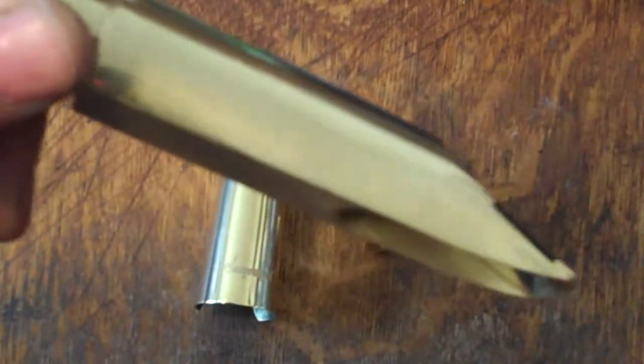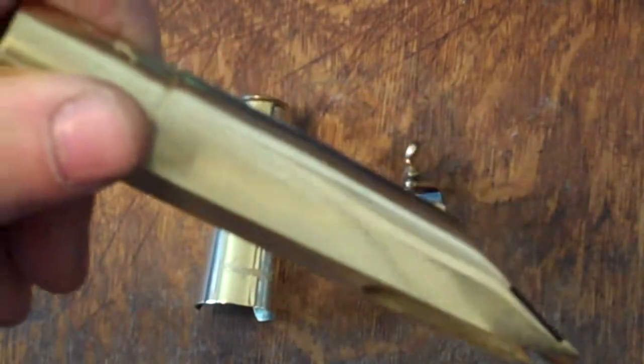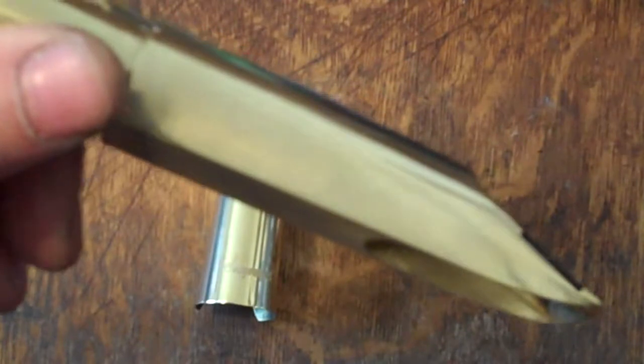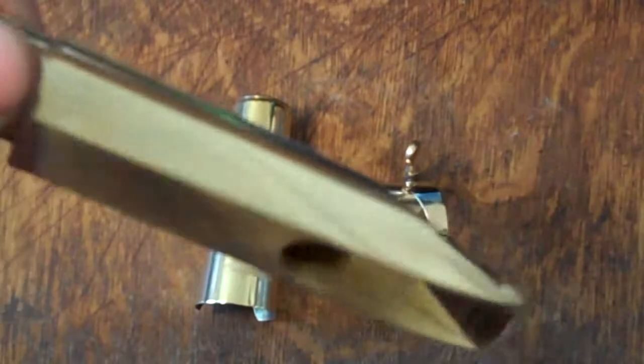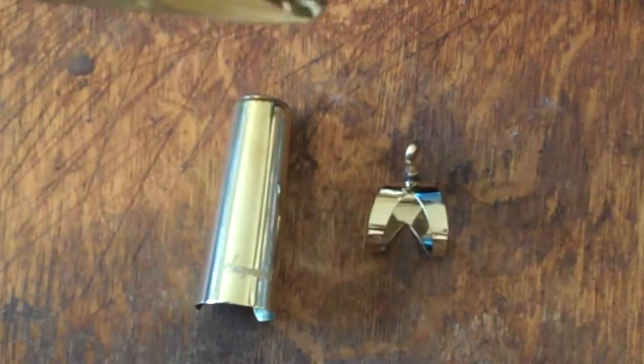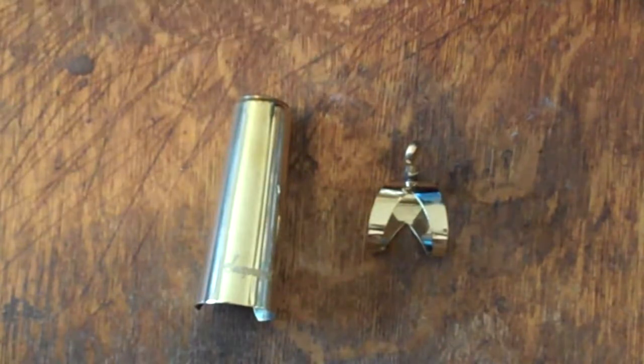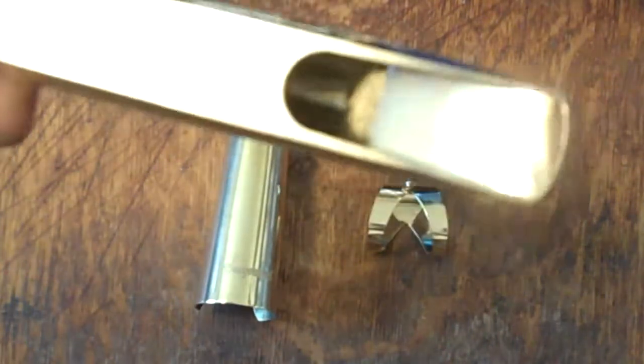Now I hand face every one of these myself, and the tip openings are available in two openings, 105 thousandths and 120 thousandths. Comes with a single screw ligature and an engraved Sax Gourmet metal cap, which you can see here in the background.